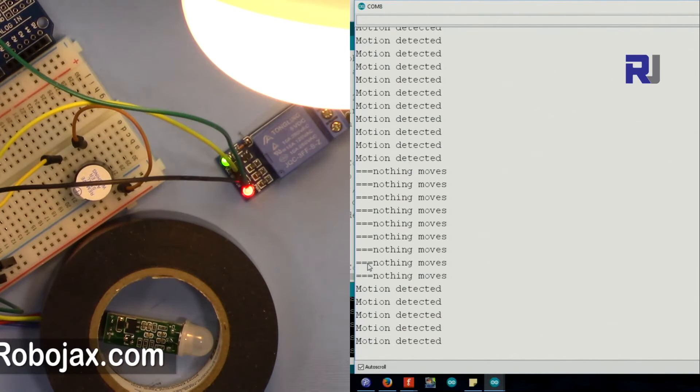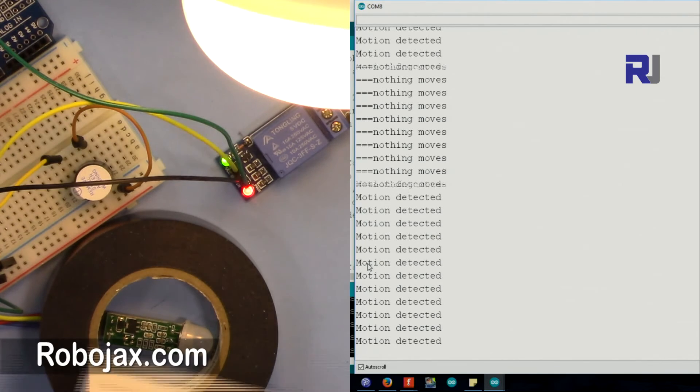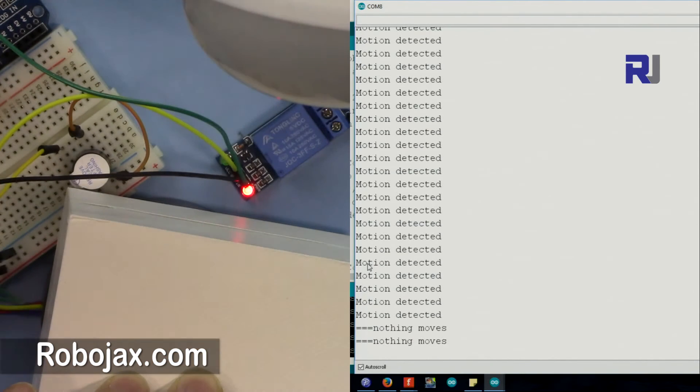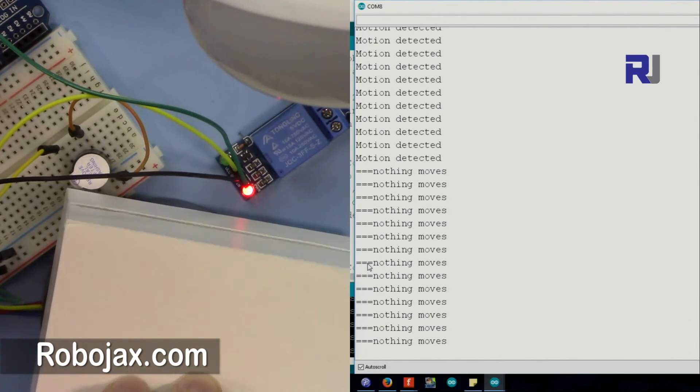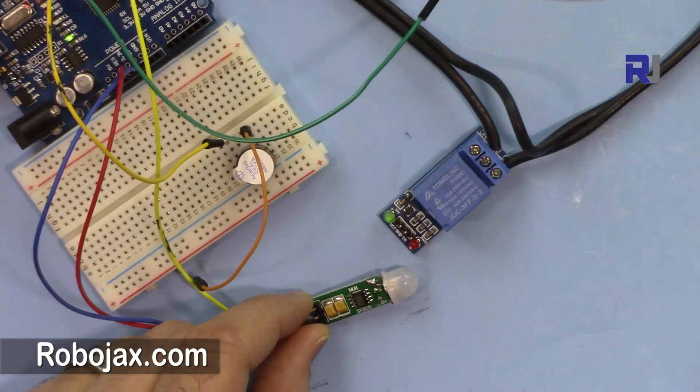This has eight second trigger. Once it is triggered it waits for eight seconds. So let me cover it. As soon as you cover it or the motion is not there, it takes eight seconds to stop. And unfortunately you cannot control this timing. This is out of your control, it's made in the module.